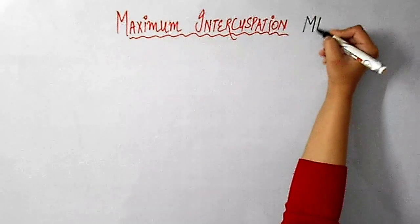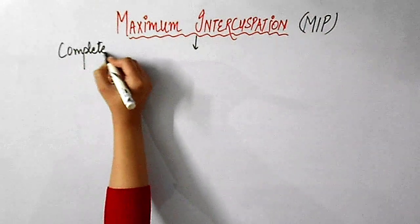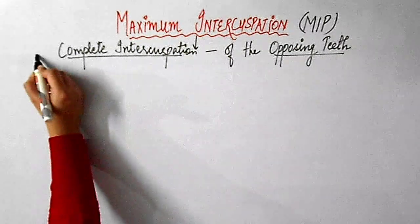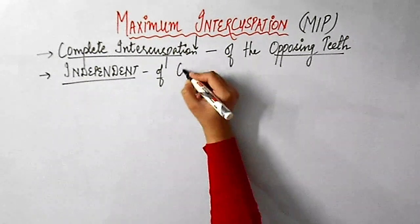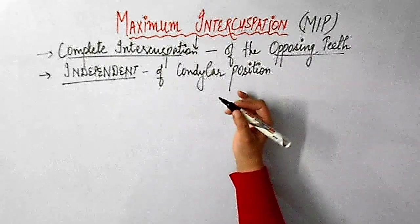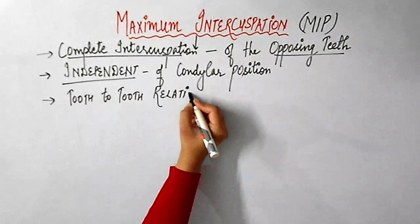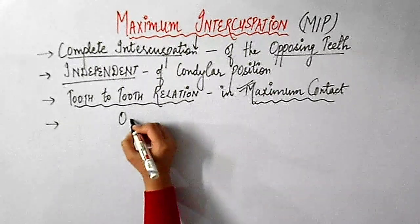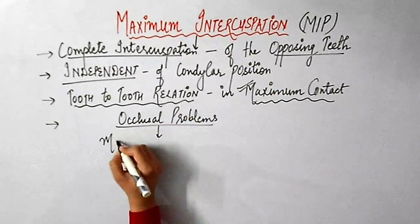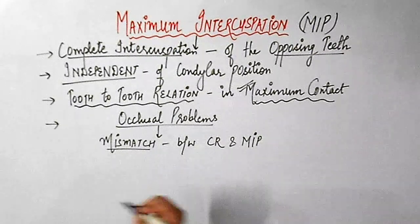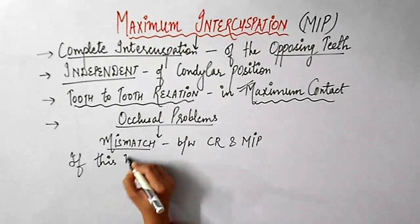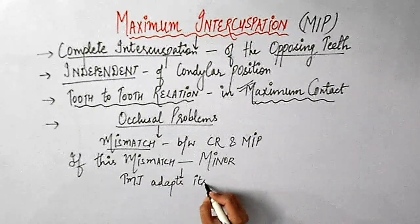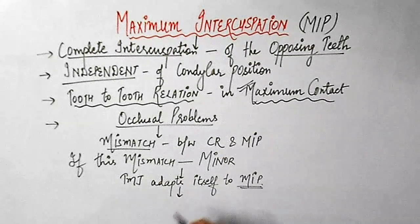Now what is maximum intercuspation or MIP? This is the complete intercuspation of the opposing teeth independent of the condylar position. Sometimes it is referred to as the best fit of the teeth regardless of the condylar position. So it is the tooth-to-tooth relation in maximum contact, whereas centric relation is bone-to-bone relation as I have already stated before. All the occlusion problems begin when there is a mismatch between centric relation and maximum intercuspation. If this mismatch is minor, then the TMJ adapts itself to the maximum intercuspal position, and this posture is called the adapted centric posture or ACP.